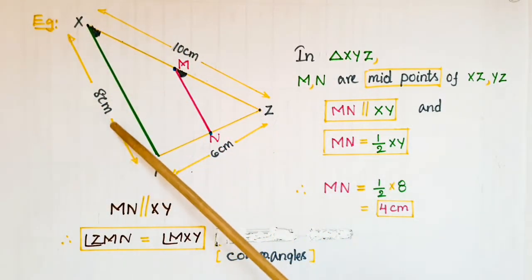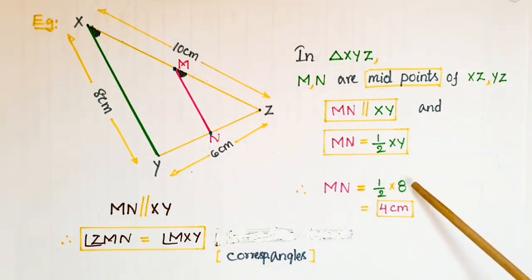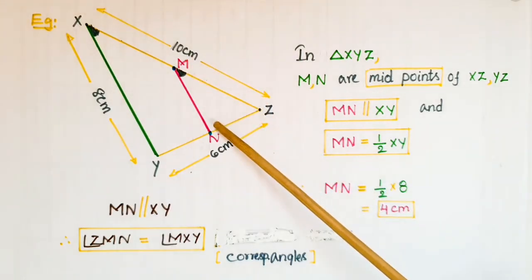Here XY is 8 cm, so MN equals half of XY, which is half of 8, equal to 4 cm. Therefore MN equals 4 cm.